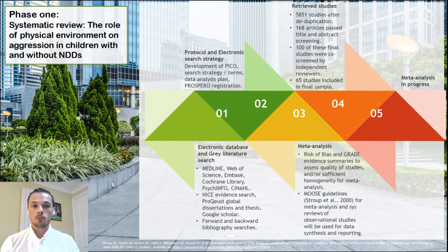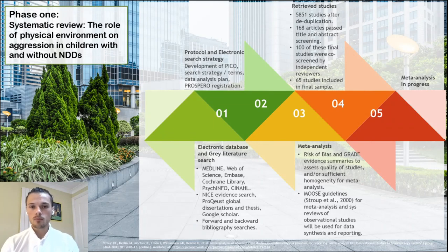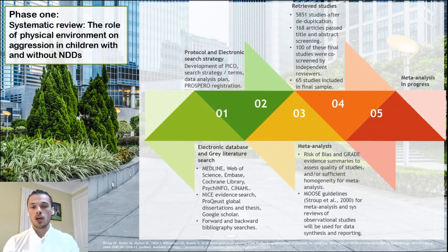This is a brief overview of the systematic review, which is currently ongoing. We developed our initial hypothesis, research question, literature search, PICO development, data analysis plan, and protocol for Prospero registration, which is online now. In collaboration with UCL-trained librarians experienced in systematic reviews, we developed our search terms and conducted our electronic search strategy and literature search.